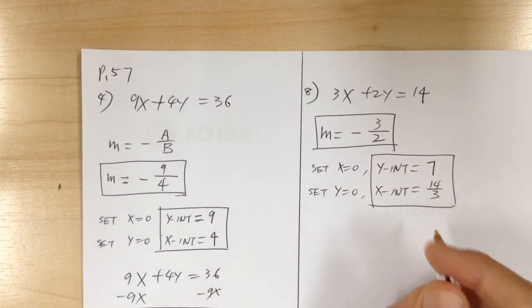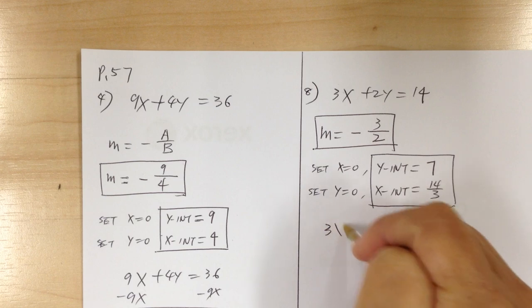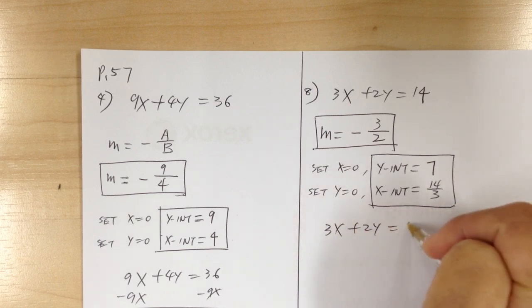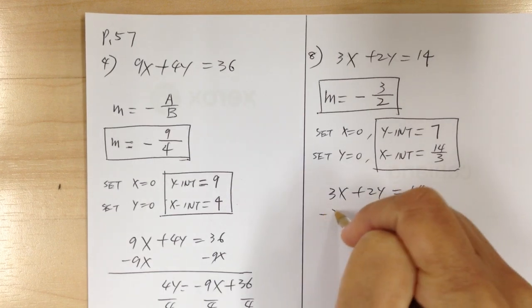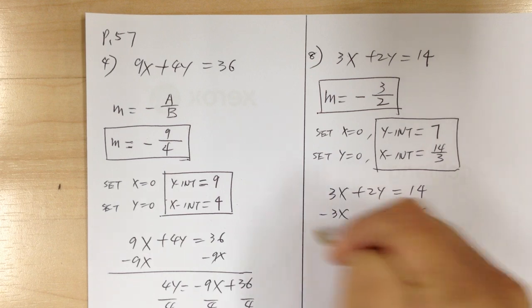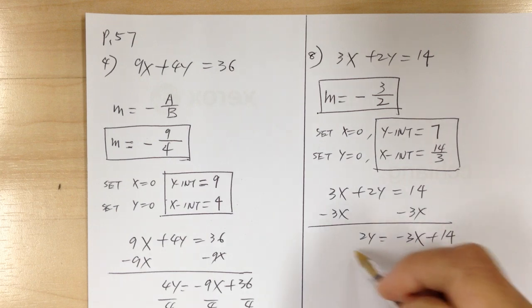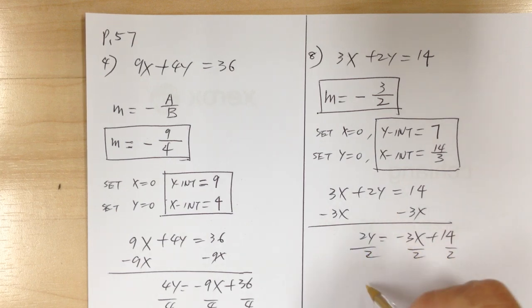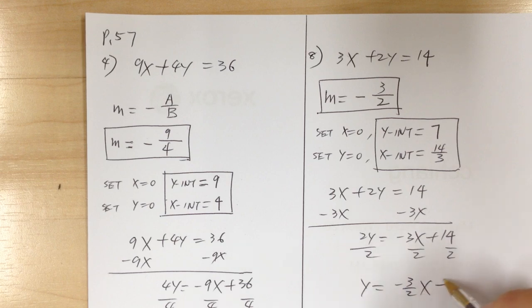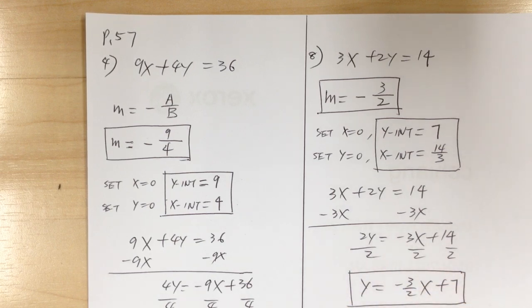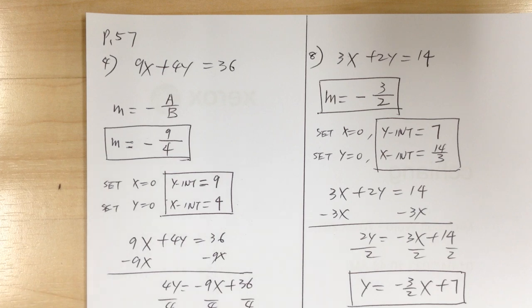To put in slope-intercept form: starting with 3x plus 2y equals 14, subtract 3x from both sides to get 2y equals negative 3x plus 14. Dividing by 2 gives y equals negative 3 over 2 times x plus 7. That's the slope-intercept form.